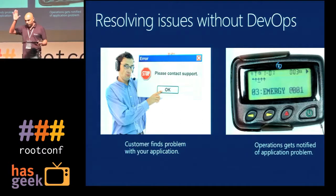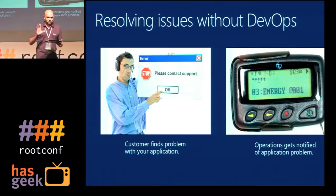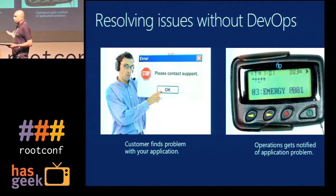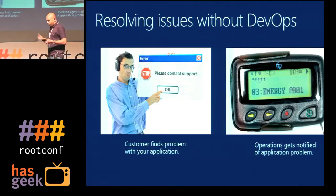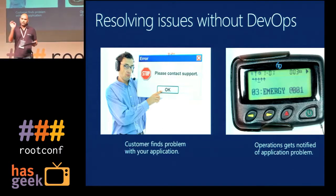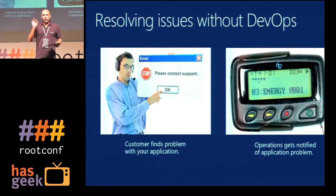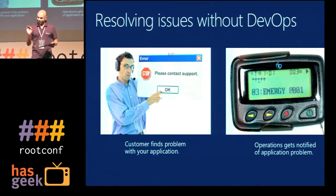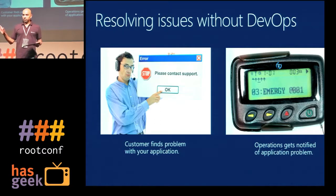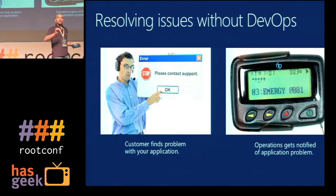How many of you know what that device is? This used to be called a pager before the mobile phone came in. This is typically how people used to get reports that something is wrong on the server. And I know Anand has spent quite a lot of nights out trying to sort that out. Whenever a customer reports a problem and you go to the dev guy, the first response you get is that it works fine on my machine. It happens all the time.